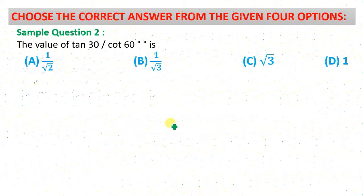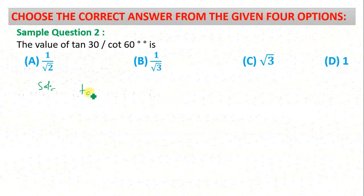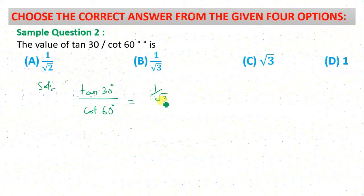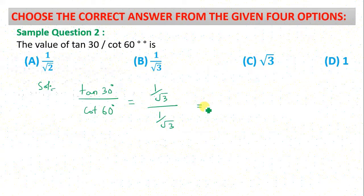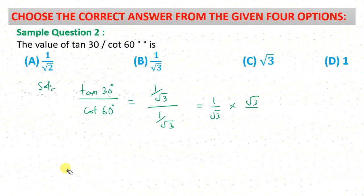Question number 2: tan 30° divided by cot 60°. Solution: tan 30° = 1/√3, and cot 60° is also 1/√3. So 1/√3 divided by 1/√3 equals 1. Your answer is 1. The correct option is D.